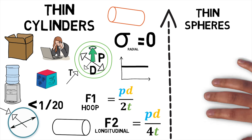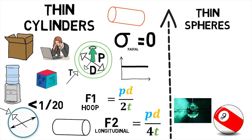Thin spheres, on the other hand, are found in old diving equipment and buoys.